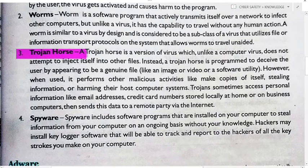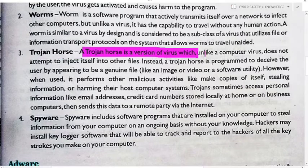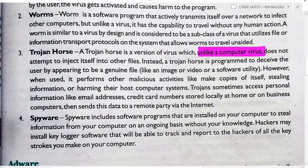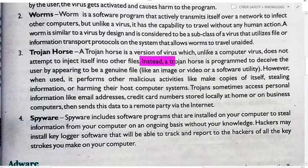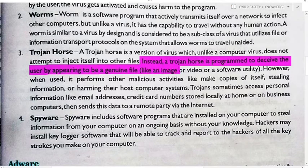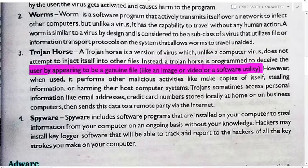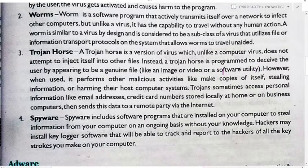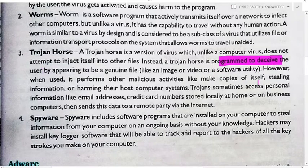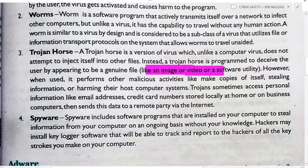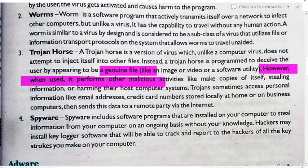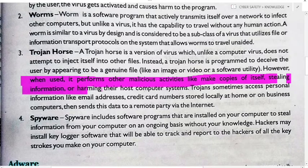Next is a Trojan horse. A Trojan horse is a type of virus which, unlike a computer virus, does not attempt to inject itself into other files. Instead, a Trojan horse is programmed to deceive the user by appearing to be a genuine file like an image, video, or software utility. When the user clicks on it, it spreads and performs other malicious activities like making copies of itself, stealing information, and harming the host computer system.